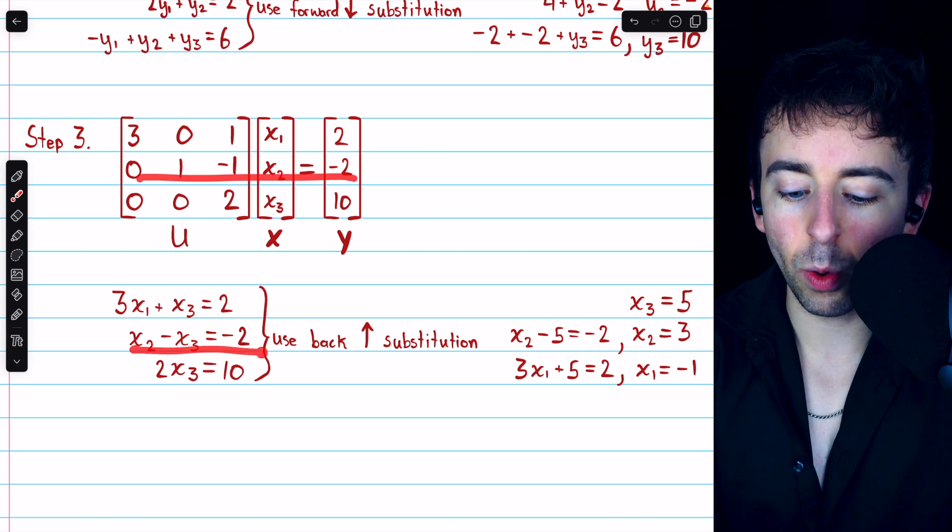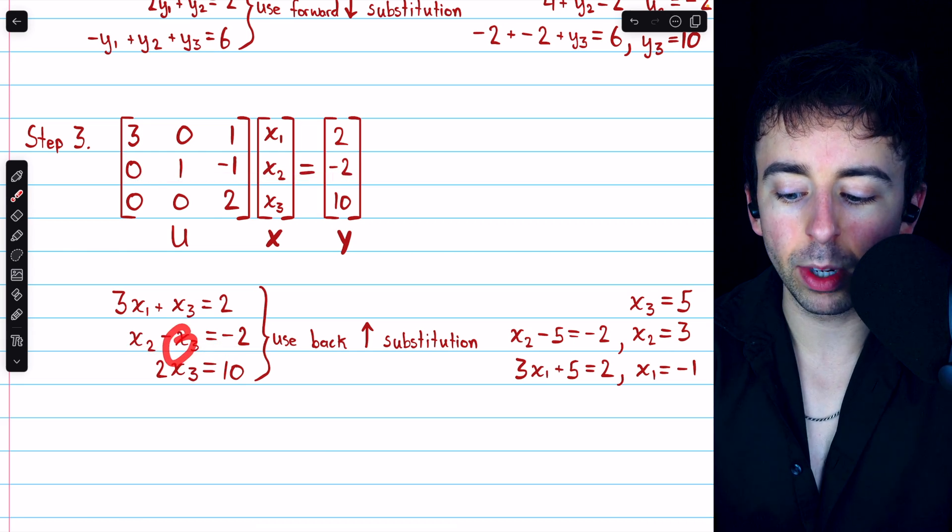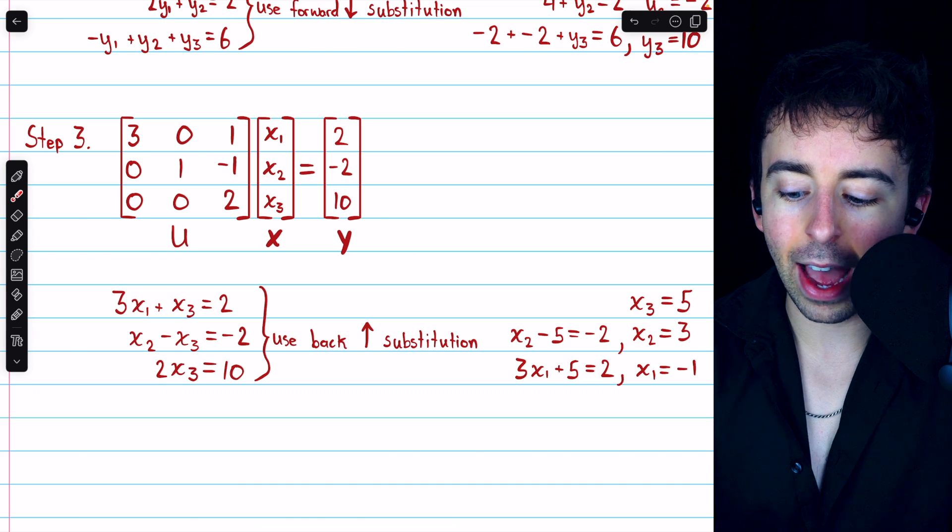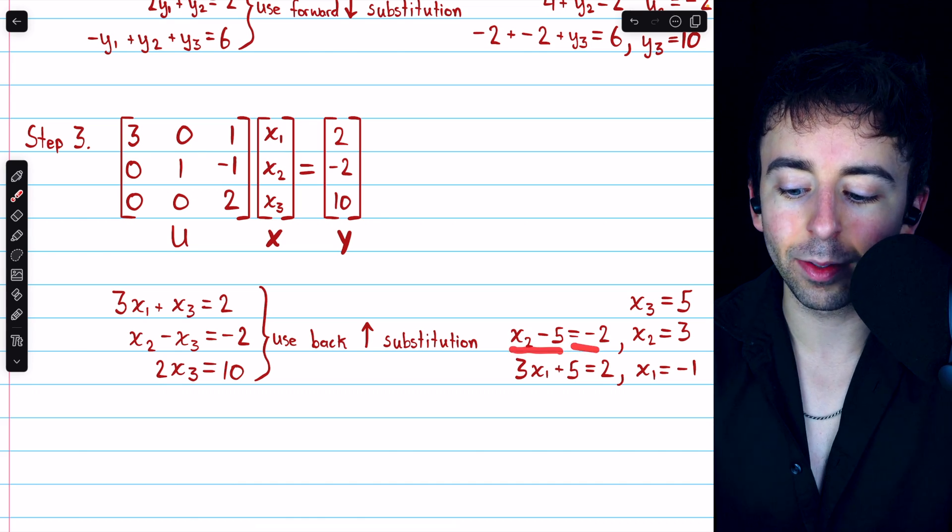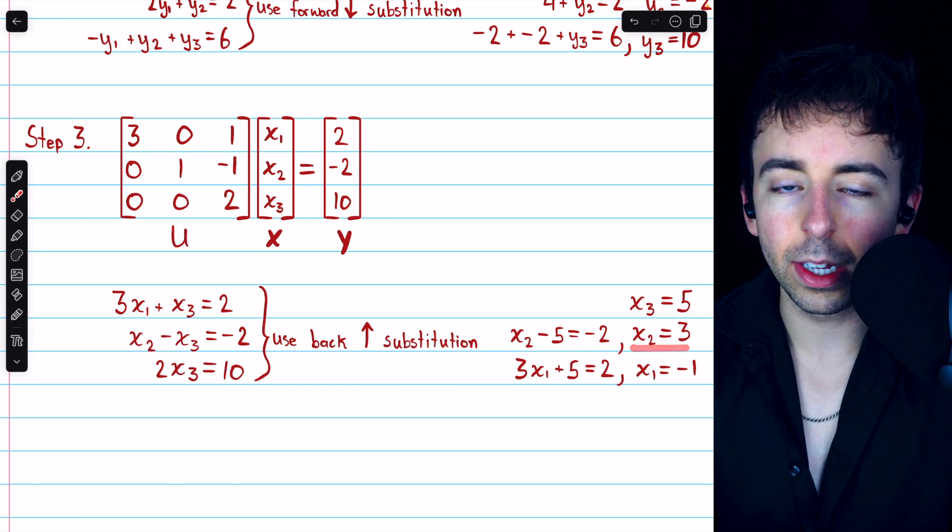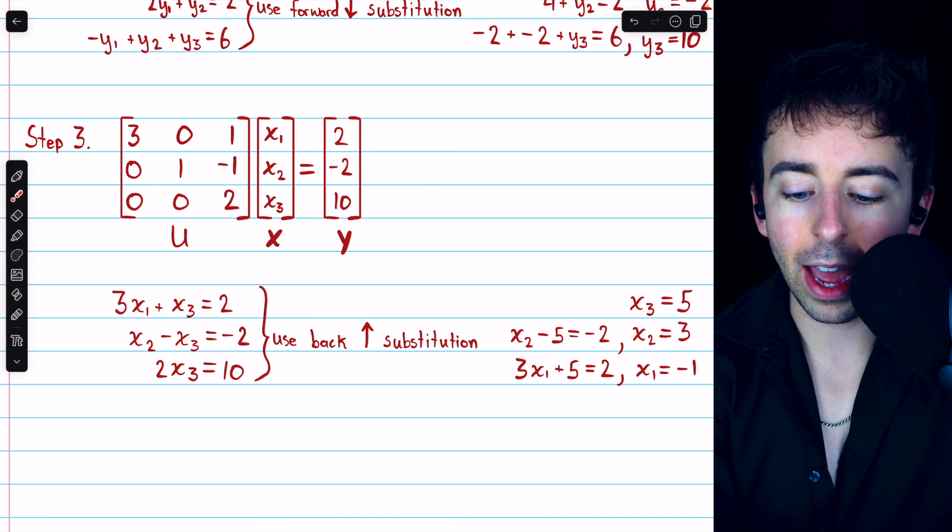Then, row 2 gives us this equation, and we know that X3 is 5, so we have that X2 minus 5 equals negative 2, and so X2 equals positive 3.